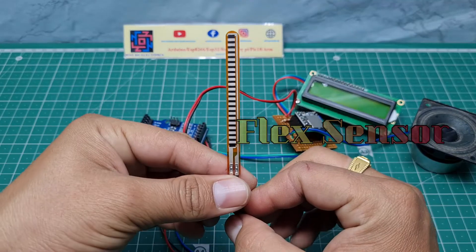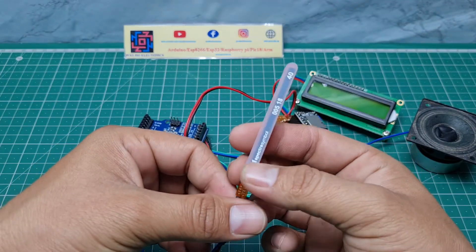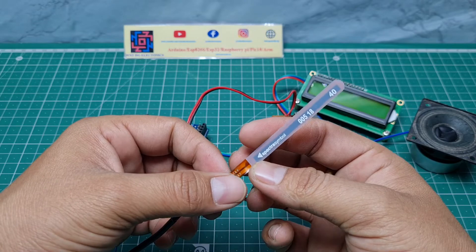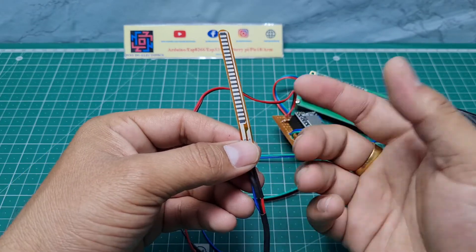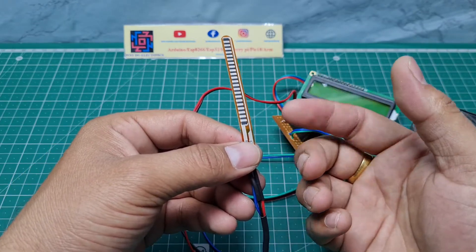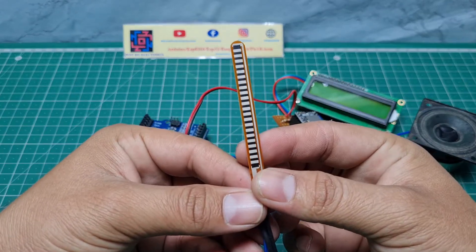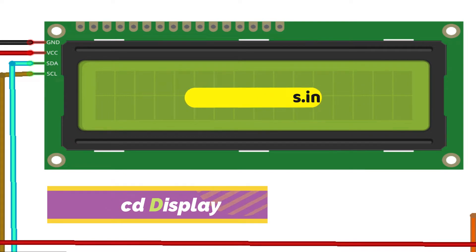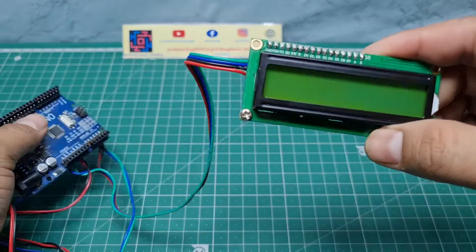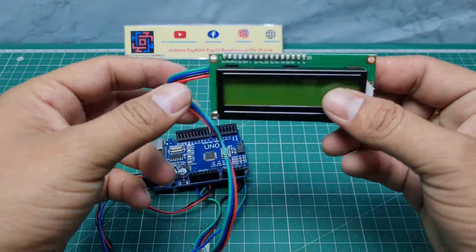This is the flag sensor I'm using. If you use different flag sensors, you can also put different commands. If you use gloves, that is really good. I am using only one flag sensor and a 16x2 LCD display with I2C module.